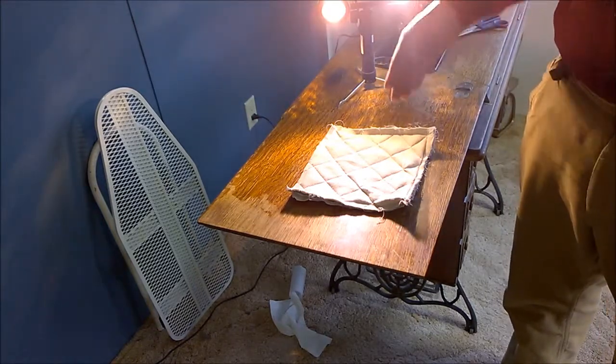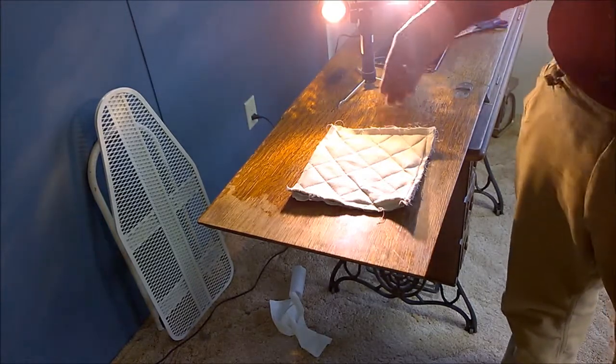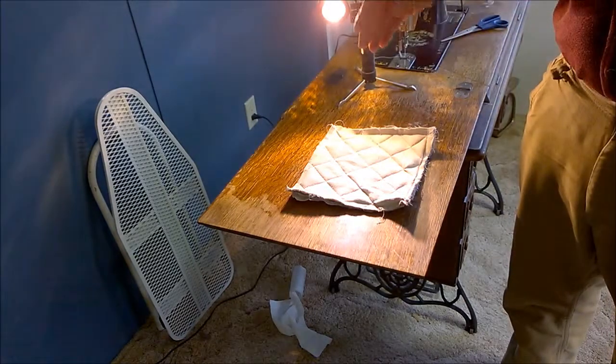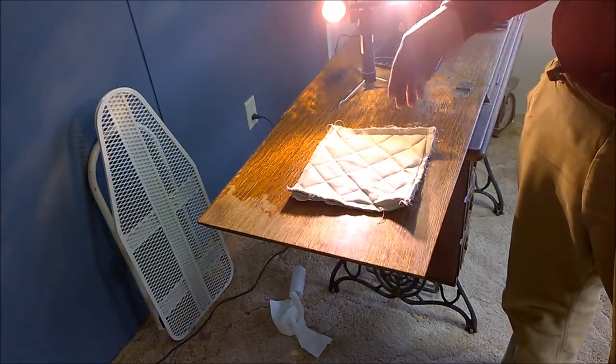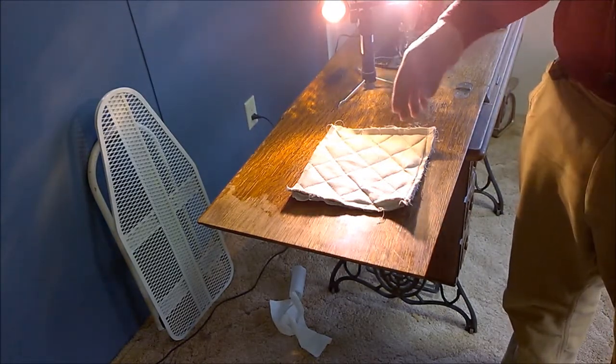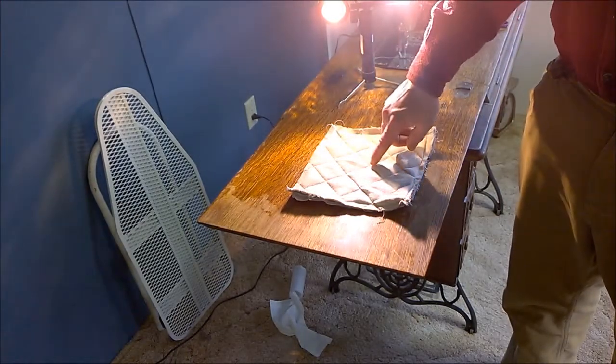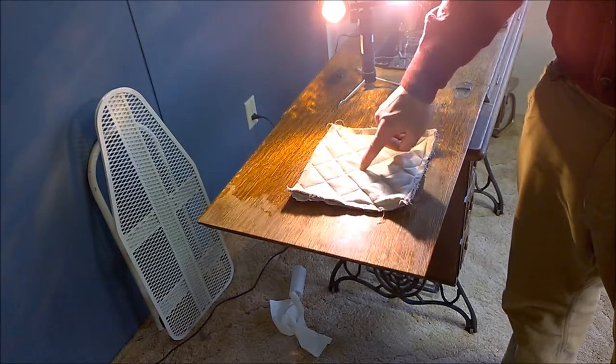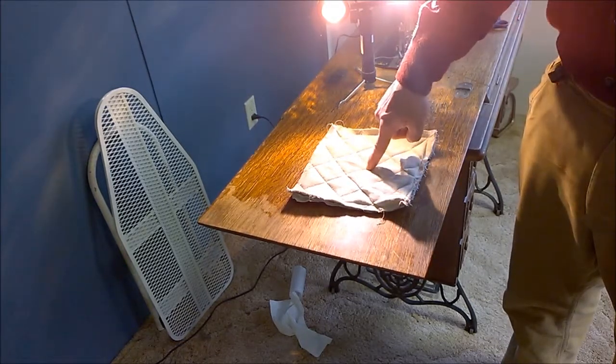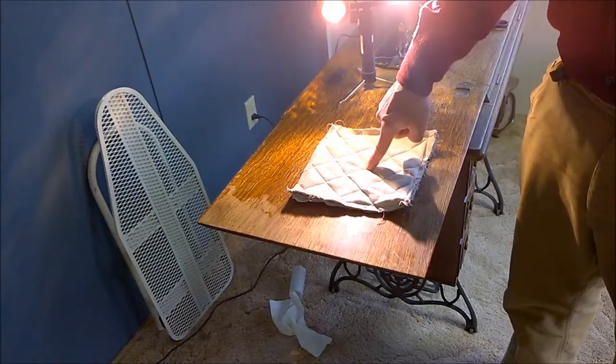Wherever a needle has gone through and stitched the glove is a section of the glove that is very weak because the integrity of the material has been weakened there. So it stands to reason for me that where we have cross sections like this that is probably the weakest point.